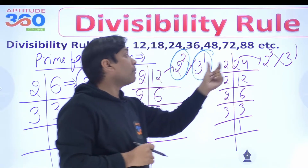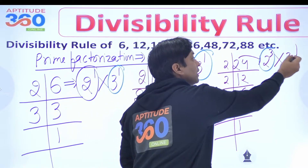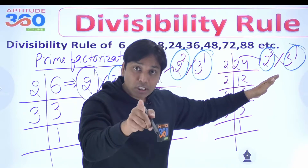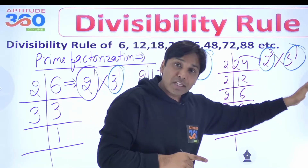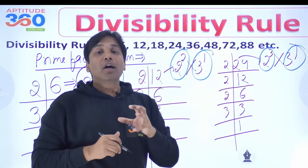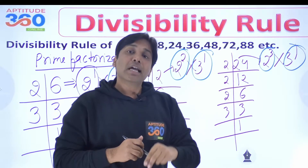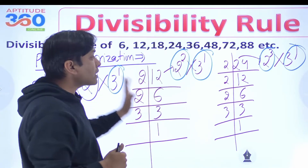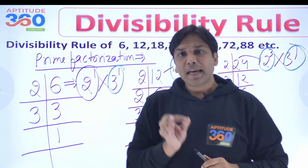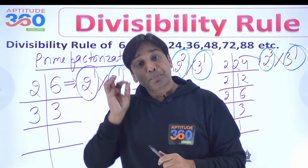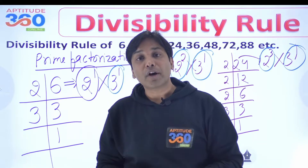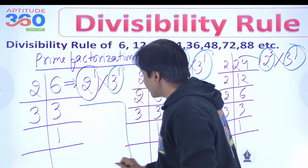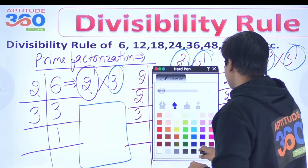How about 24? 24 comes out as 2 to the power 3 times 3 to the power 1. So I would say this number has to be divisible by 8. You know the divisibility rule of 8 from the previous video, and the divisibility rule of 3. If a number qualifies these two things — divisible by 8 and divisible by 3 — it is going to be divisible by 24. So for 6, 12, and 24, we simply find out the prime factorization of that composite number.